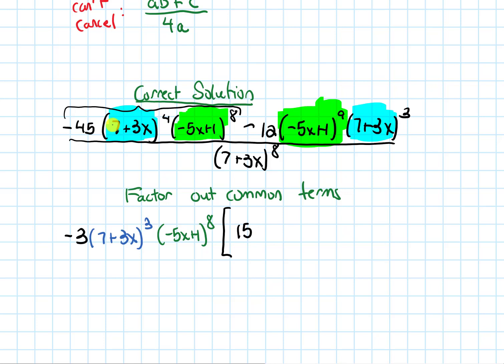And then I'll also have, there were four of these 7+3x's. I took out three of them. So that means there's going to be 7+3x to the first power left over, which is just the same thing as writing 7+3x. There won't be any -5x+1's there because I took out all eight of them.